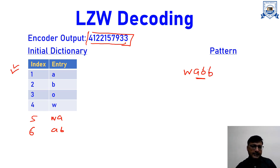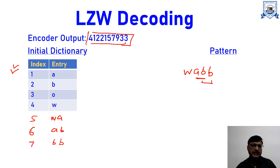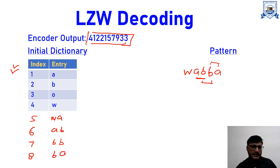We are doing both things in parallel: decoding the pattern as well as making entries into the dictionary. Next is 1 — 1 is A, so we put A. We consider B and A together. Moving ahead, next index is 5 — against 5 we have WA, so we put W and A here. Then next we consider A and W.